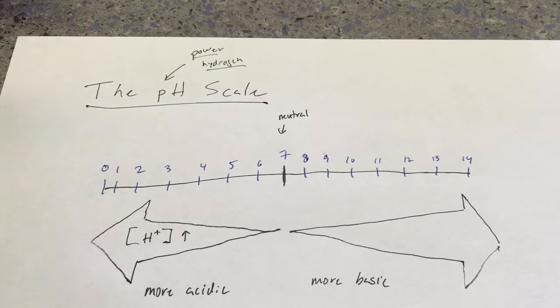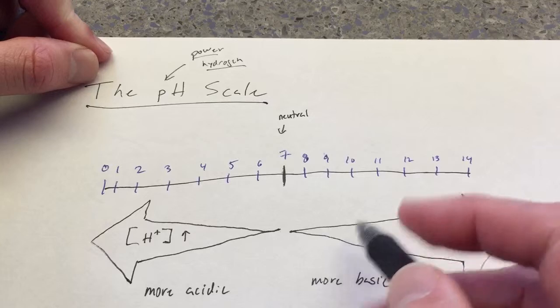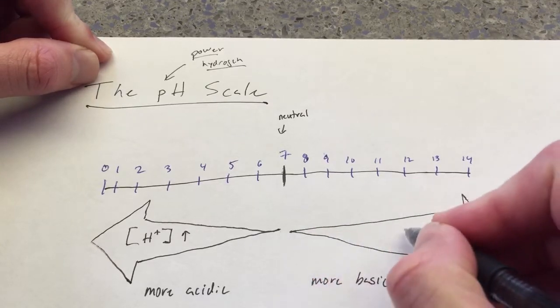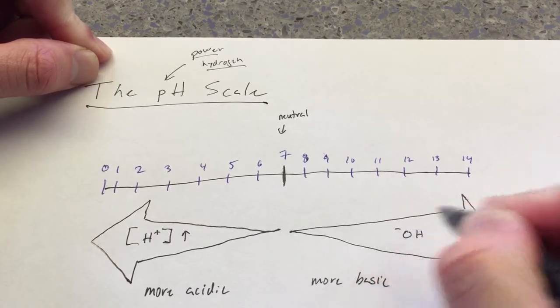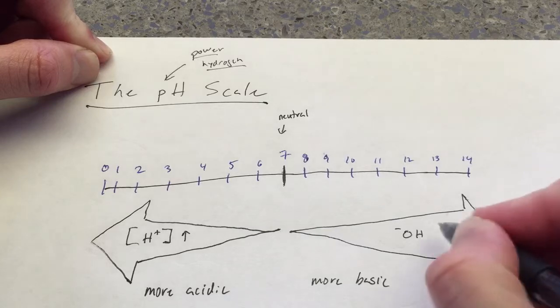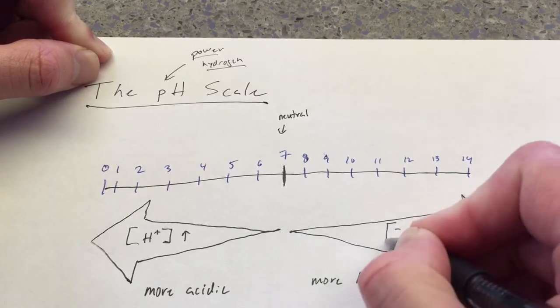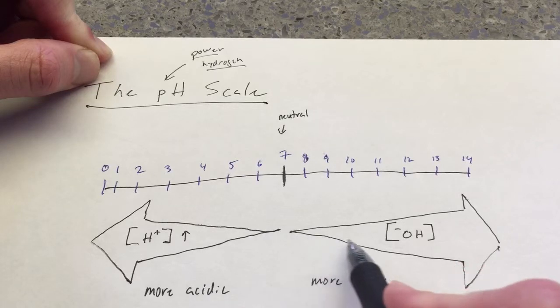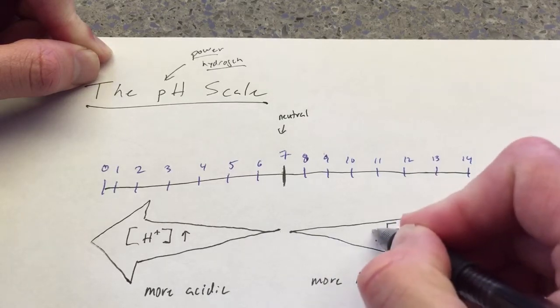So on the other hand, something is more basic. A solution is more basic when you increase the concentration of OH minus ions. Now this stands for hydroxide ions.